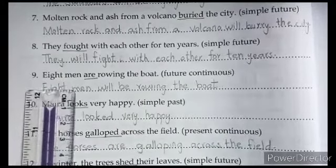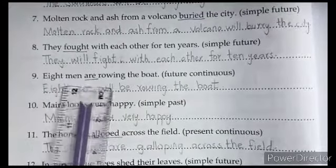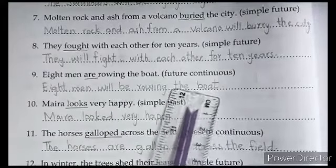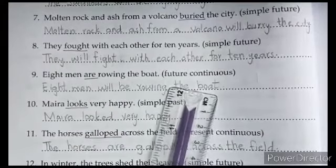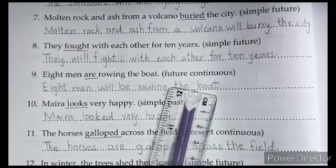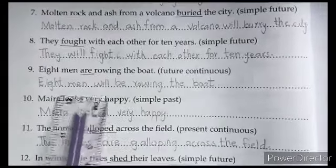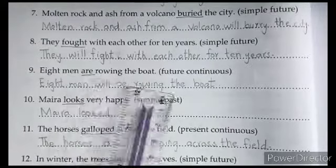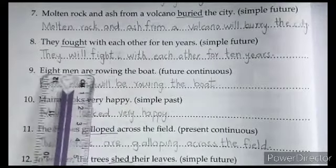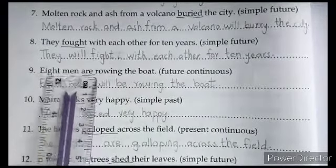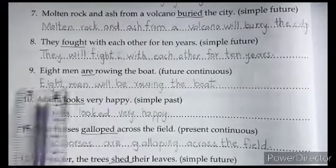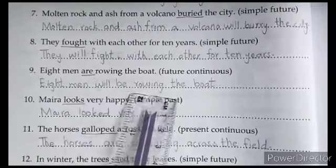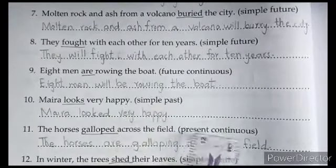Sentence 9: '8 men are rowing the boat' — change to future continuous. The -ing form 'rowing' is already there, so we replace 'are' with 'will be': '8 men will be rowing the boat.'